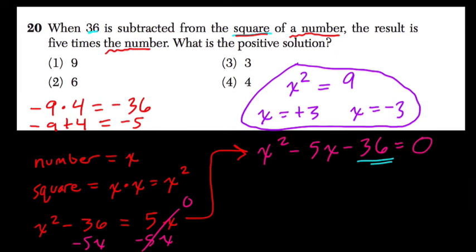Again, the general strategy and hope is that you can find factors of this term. This is the c term that multiply to c and that add to the b term. And that just has to do with the way you factor this out.